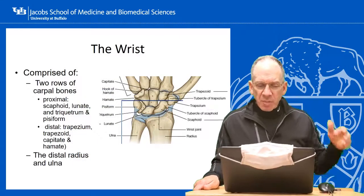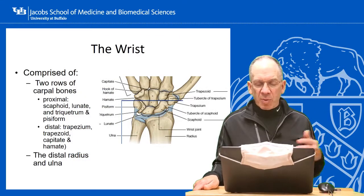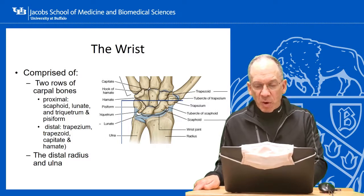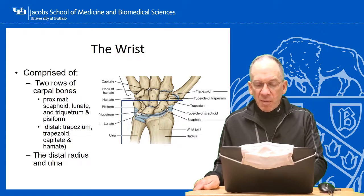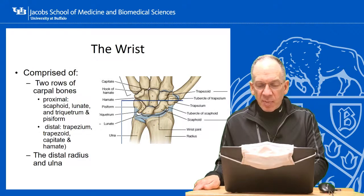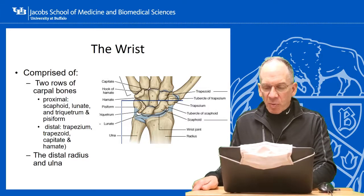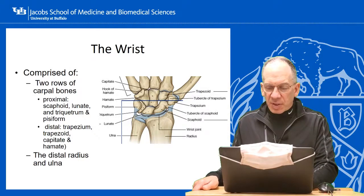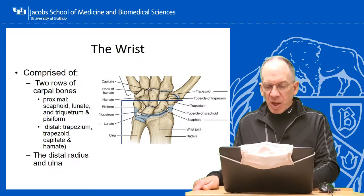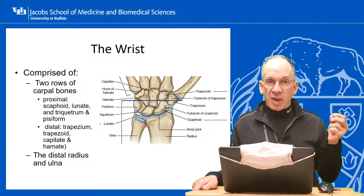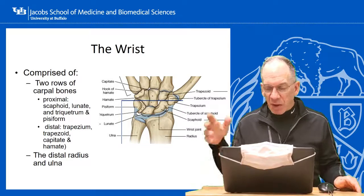Wrist anatomy: the wrist is comprised of two rows of carpal bones. The distal row includes the hamate, capitate, trapezoid, and trapezium. The proximal row consists of the scaphoid, lunate, and triquetrum. The pisiform sits on the front of the carpus along for the ride. The scaphoid occupies space in both rows and serves as a crucial link between them. The rest of the wrist includes the metacarpals and the distal radius and ulna.